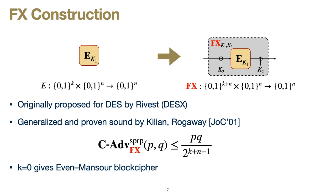Starting with FX: recall FX was the construction where we XOR into the input and the output of the block cipher. This was originally proposed for DES by Rivest, and generalized and proven sound in the classical setting by Kilian and Rogaway. If we consider the special case where the key length of the block cipher is zero — meaning it's really just a random permutation — this is the Even-Mansour construction of a block cipher from a random permutation. When discussing the proof I'll focus on this case; adding back in the key of the block cipher doesn't add anything too interesting to the analysis.